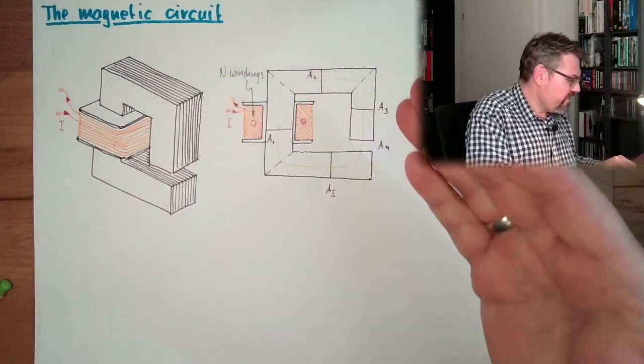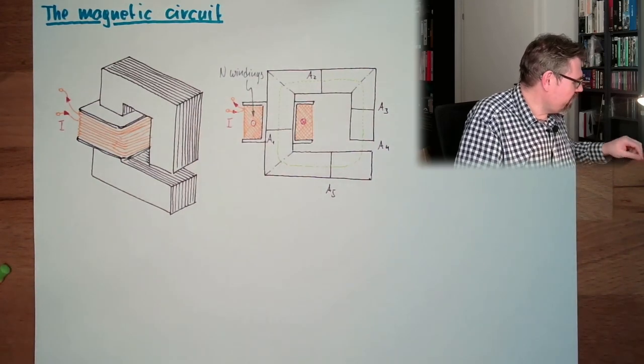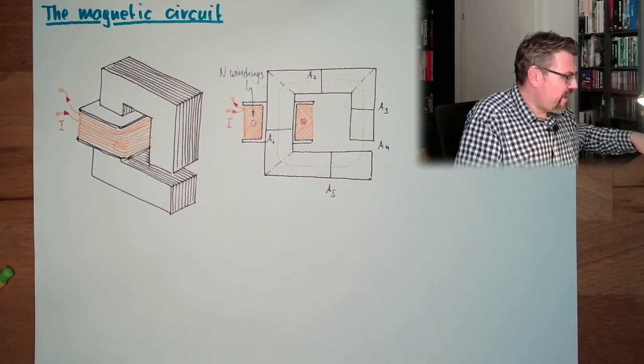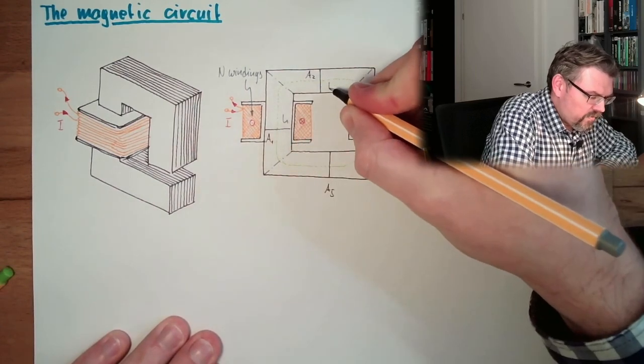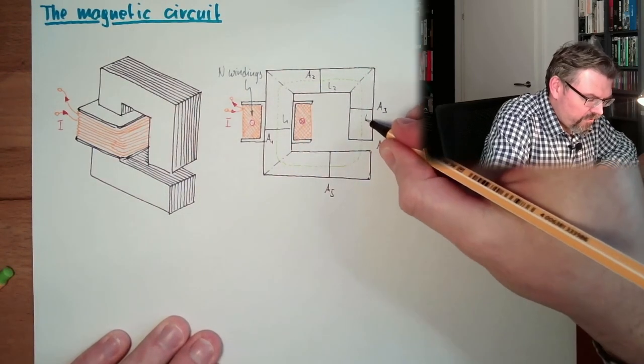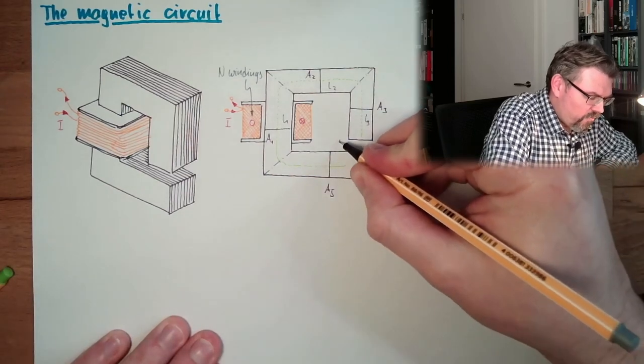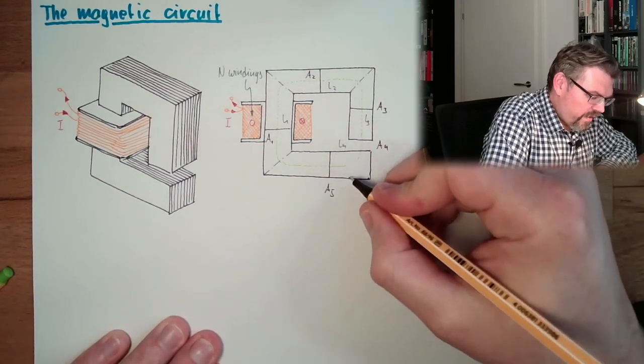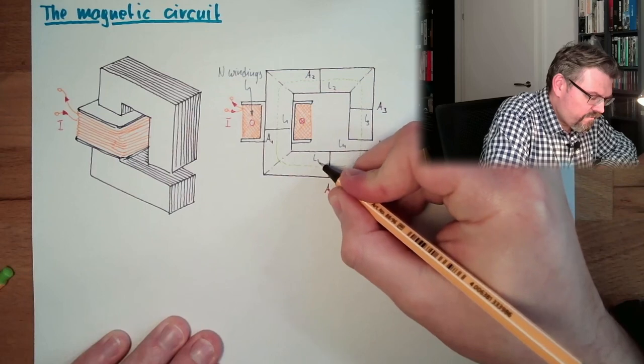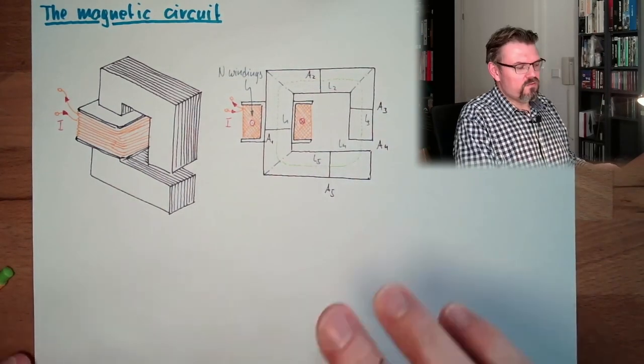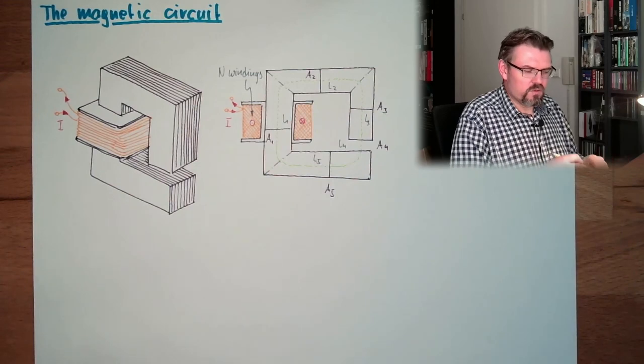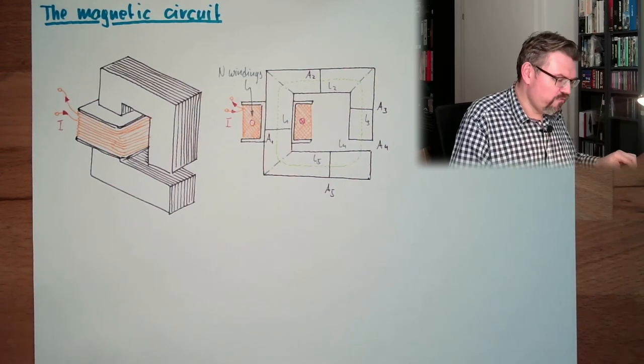And this has now the length L1 here, middle length L1, middle length L2, middle length L3, middle length L4, middle length L5. And then all those lengths together, they have the full circle. We use the average value.